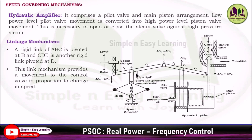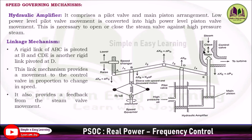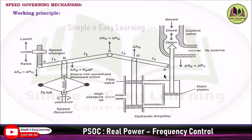The linkage mechanism consists of a rigid link A-B-C pivoted at point B, and link C-D-E pivoted at D. This linkage mechanism provides movement to the control valve in proportion to the change in speed. Whatever raise or lower command is given in the speed changer, the control valve opens and closes accordingly. It also provides feedback from the steam valve movement.